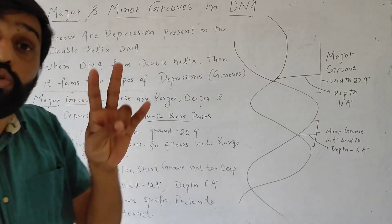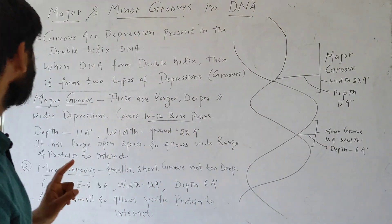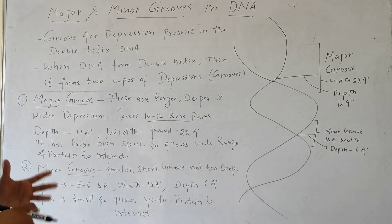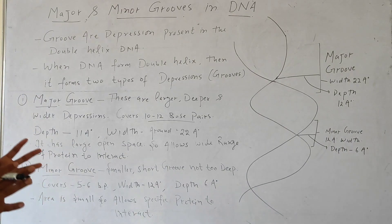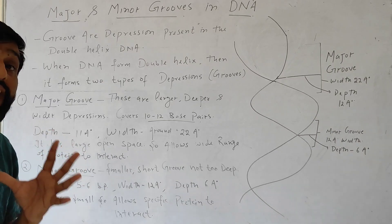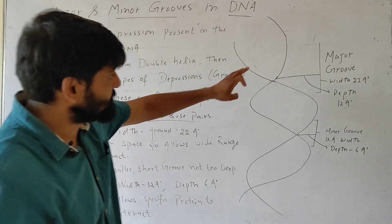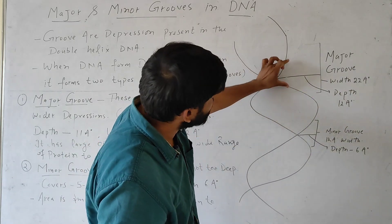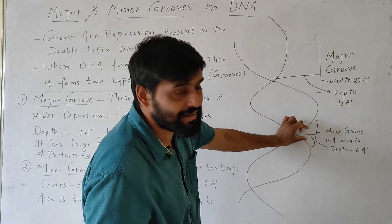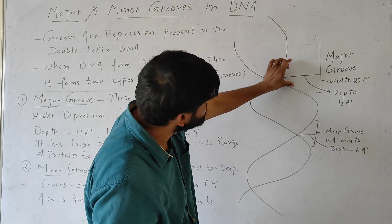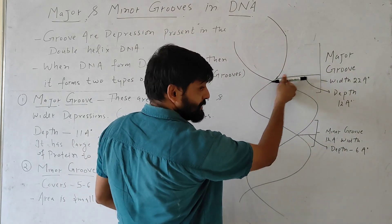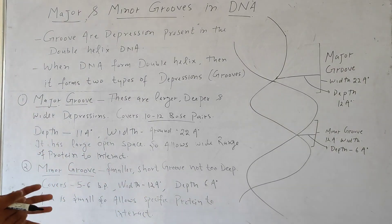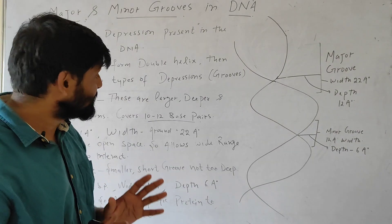These grooves are of two types. The major groove, as its name suggests, is larger — so these are larger, deeper, and wider depressions. In this DNA double helix, if we look from this side, this is the large depression and this is the smaller depression. So the major groove is larger, wider, and deeper.